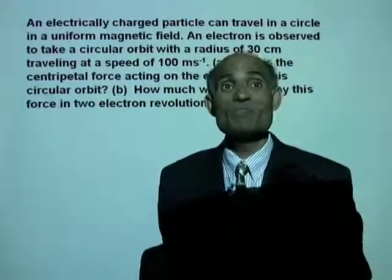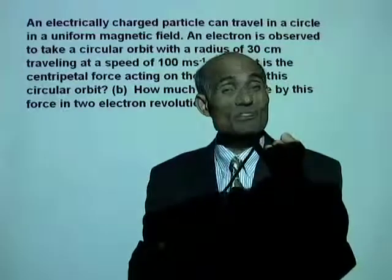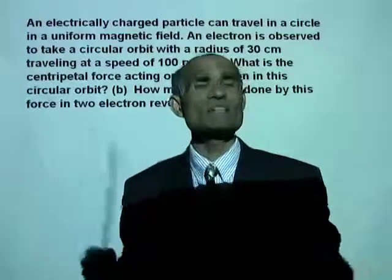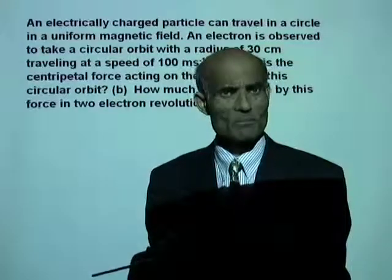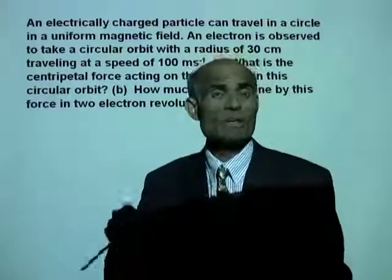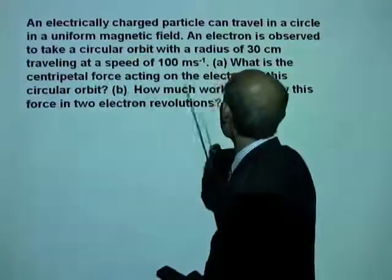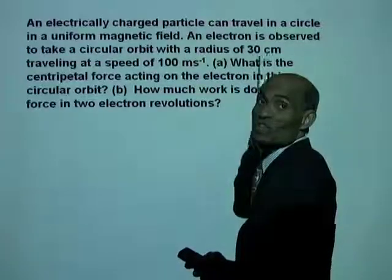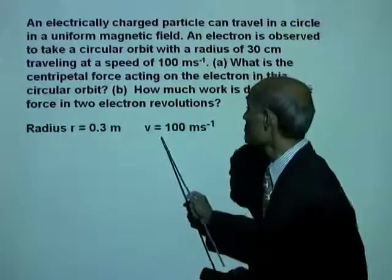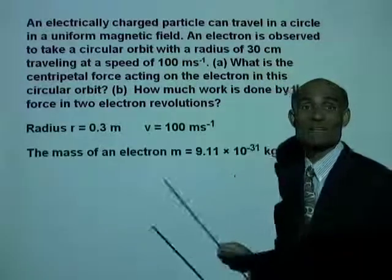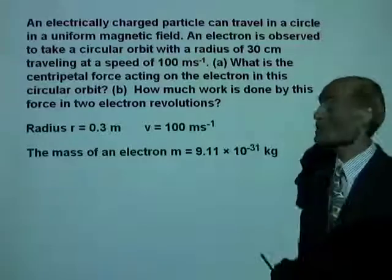To find the centripetal force, we need to know the mass of the electron, which is 9.1 times 10 to the negative 31 kilogram. Once we know the mass of the electron, its speed, and the radius — 30 cm or 0.3 m — we can find the centripetal force. The speed is 100 m per second and the mass is 9.11 times 10 to the negative 31 kilogram.